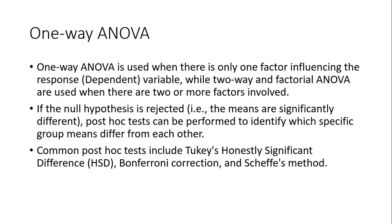One-way ANOVA استعمال کیا جاتا ہے جب ہمارے پاس صرف ایک factor ہو جو dependent variable کو influence کر رہا ہو۔ Two-way ANOVA — جسے factorial ANOVA بھی کہتے ہیں — ہم استعمال کرتے ہیں جب ہمارے پاس دو یا اس سے زیادہ factors ہوں۔